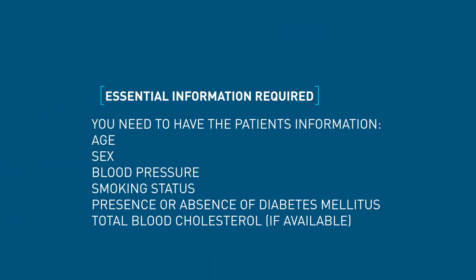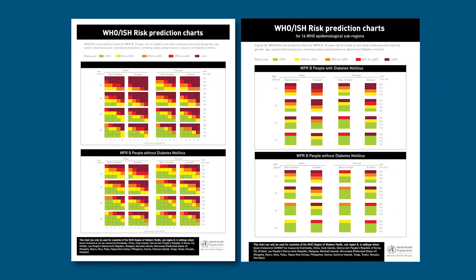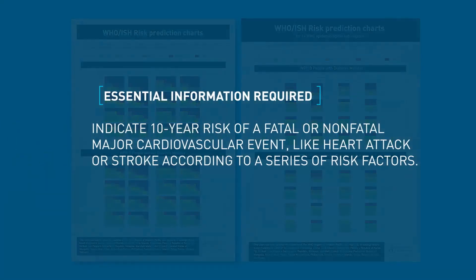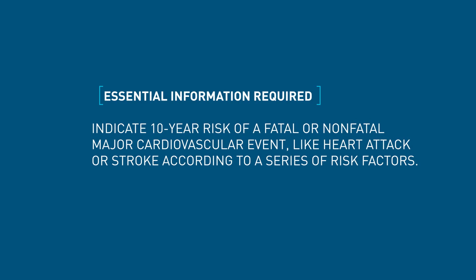You need to have the patient's information on age, sex, blood pressure, smoking status, presence or absence of diabetes mellitus, and if available, total blood cholesterol. Once you have this information you can use the charts to calculate the approximate combined risk due to all these risk factors for CVD, expressed as a 10-year risk for developing a heart attack or a stroke.